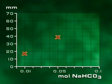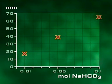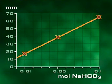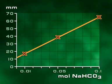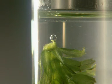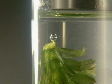At a concentration of 0.05, the bubble is 39 millimetres. At 0.1 molar, the bubble is 64 millimetres. As CO2 concentration increases, so does the size of the oxygen bubble. How has increasing the CO2 level affected the rate of photosynthesis?